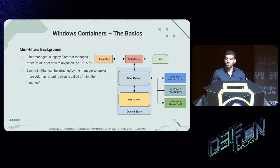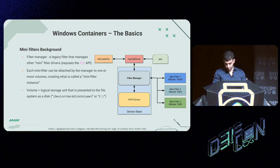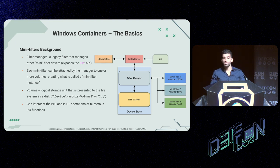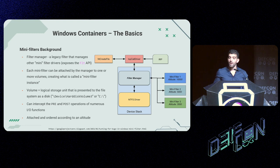Each mini filter can be attached by the manager to one or more volumes, creating what is called a mini filter instance. A volume is simply a logical storage unit presented to the file system as a disk — for example, the C drive. Mini filter instances can intercept pre and post operations of numerous IO functions like create, read, and write. An important concept is the mini filter altitude system: each mini filter specifies a numeric altitude upon registration, and the filter manager invokes callbacks according to altitude — higher altitude filters handle pre-operations first and post-operations last.